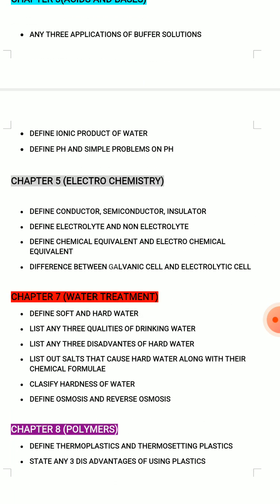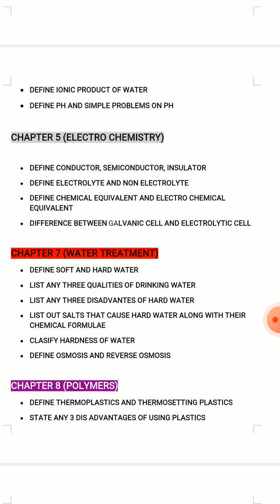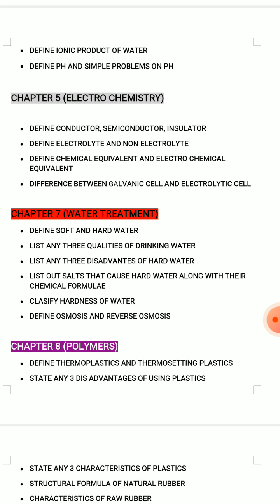Chapter 5: Electrochemistry. Definition of conductor, semiconductor, and insulator — single-line definitions, this is 3 marks. What is electrolyte and non-electrolyte? What is chemical equivalent and electrochemical equivalent — very, very repeating important question, small e and capital E representations. The difference between galvanic cell and electrolytic cell is also very important — this is 3 marks.